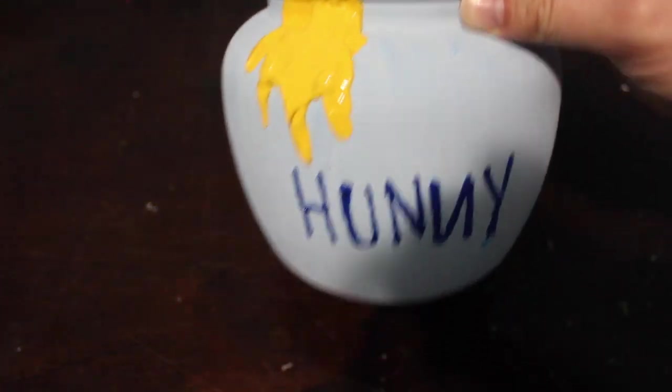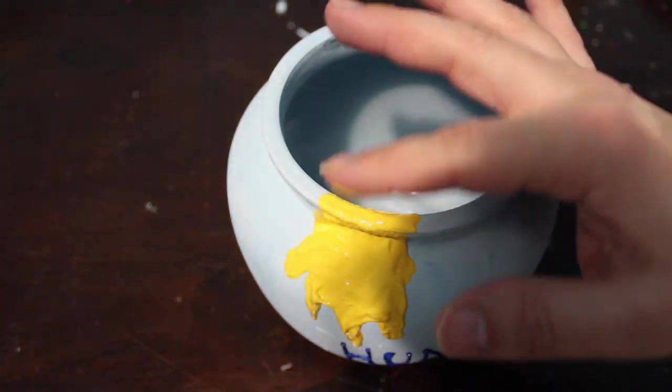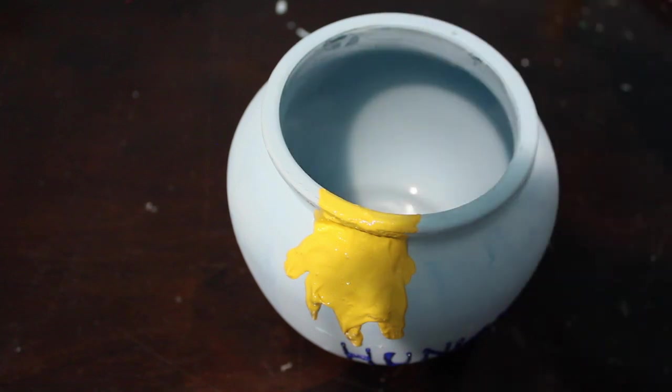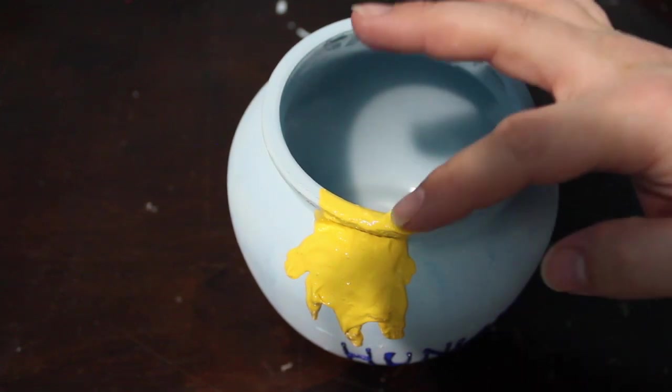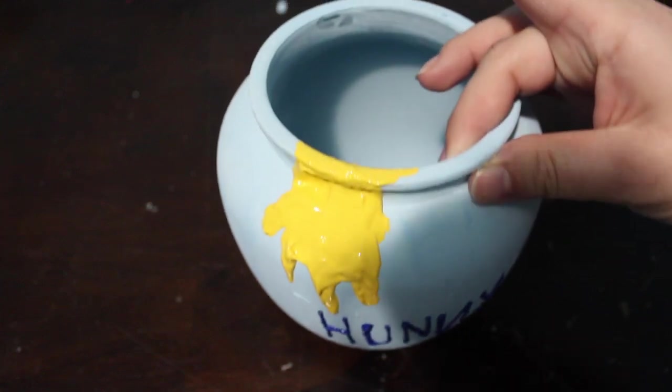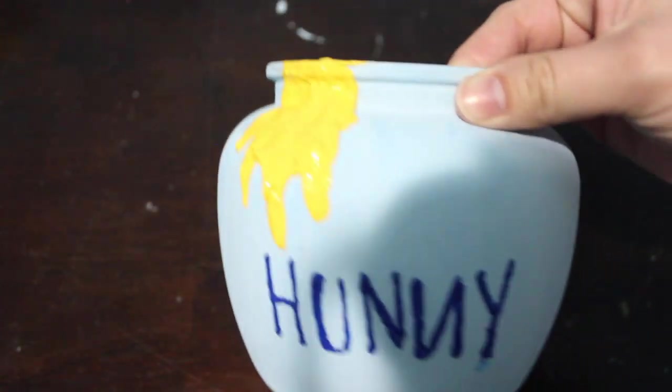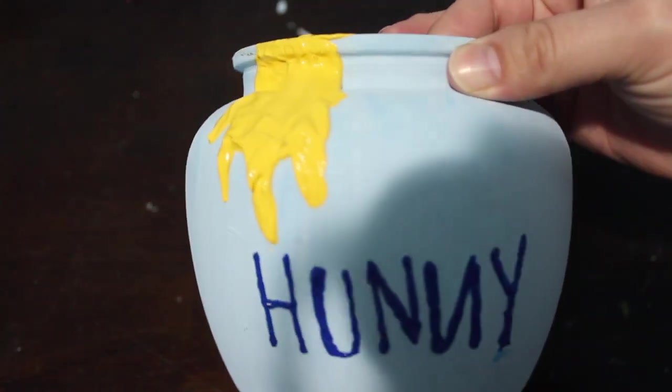And then that's pretty much it guys. That's all I did. As I said, I ended up adding more, but I'm leaving that clip out because I don't think that you should do as much as I did. But I'm just smearing it a little bit on the inside so that it does truly look like it's oozing out of the edge. And then I just let it dry and added some candies inside of it as like a little candy jar.